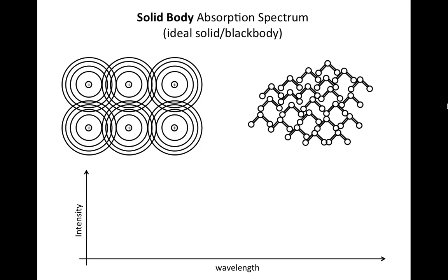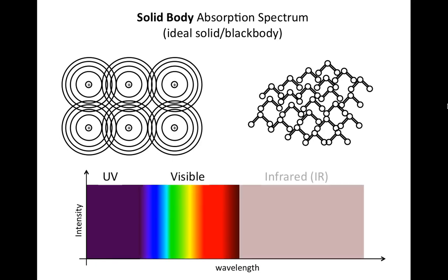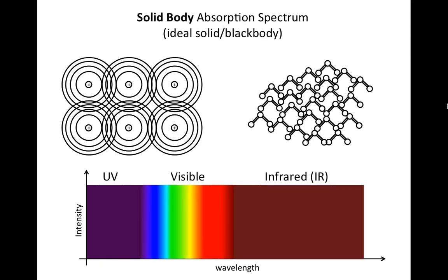And because of how diverse solids are, they can actually—a perfect ideal solid—can absorb all of the possible light that might be shined on it. That includes UV, visible, and infrared. It absorbs it all.